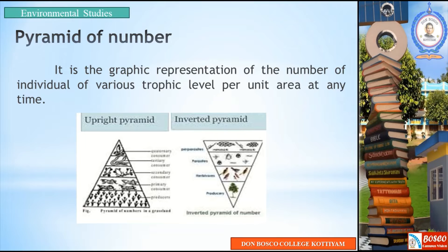The pyramid of numbers, as shown in the graph, is of two types: Upright Pyramid and Inverted Pyramid.